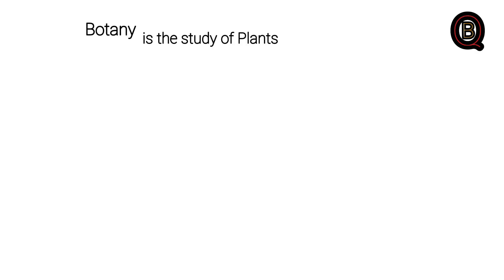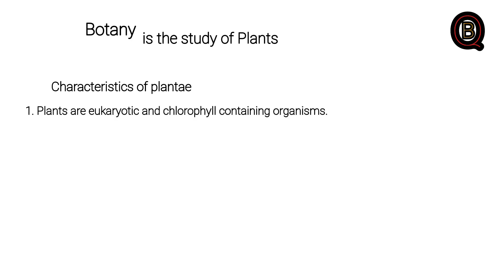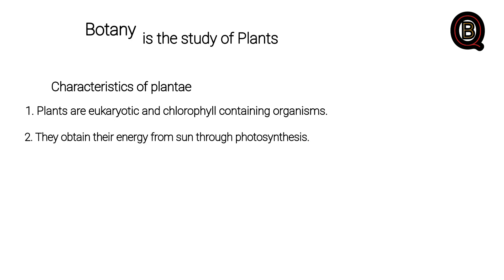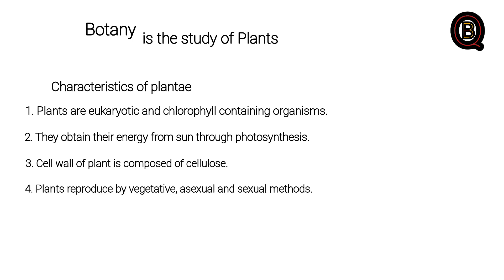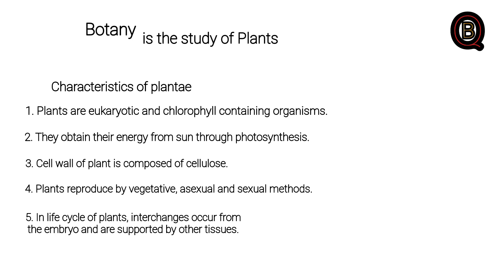What do you need to start your plant? Characteristics of plants: plants are eukaryotic and chlorophyll-containing organisms. They obtain their energy from central photosynthesis. The cell wall of a plant is composed of cellulose. Plants are reproduced by vegetative, asexual and sexual methods. In the life cycle of a plant, interchanges occur from the embryos and are supported by other tissue.